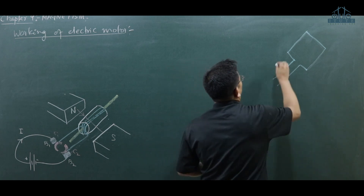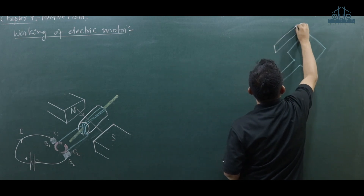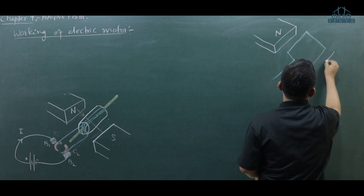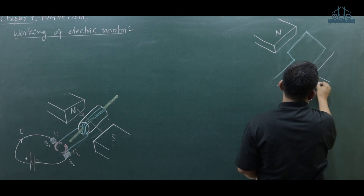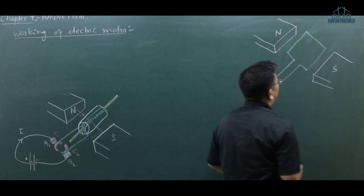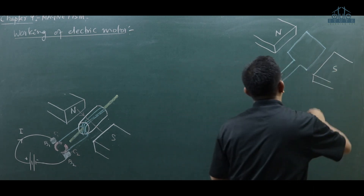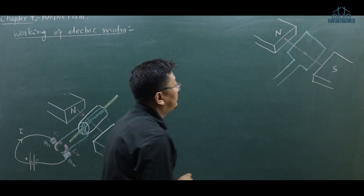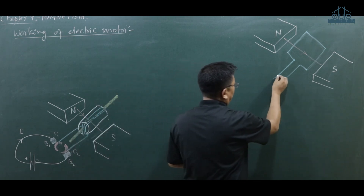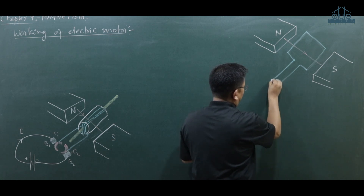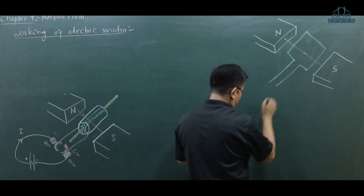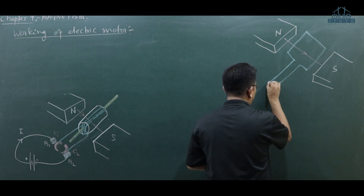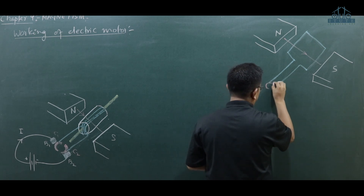North Pole and South Pole. They make an electric field direction. The split ring, or another way — the commutator. Split ring commutator.